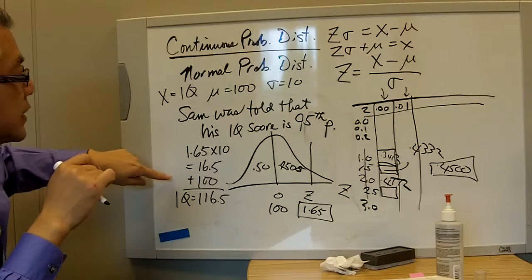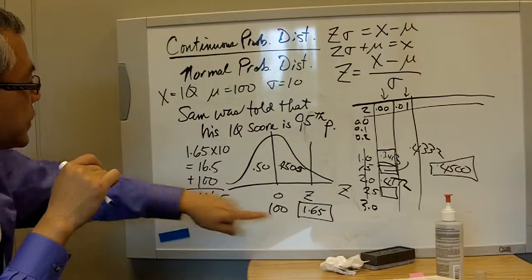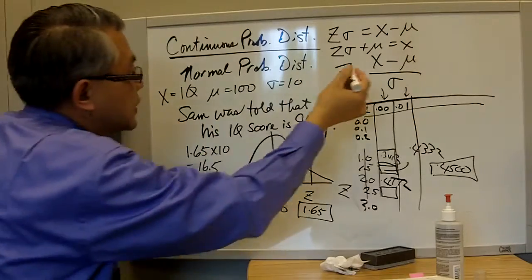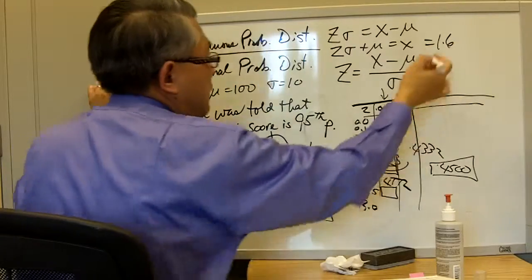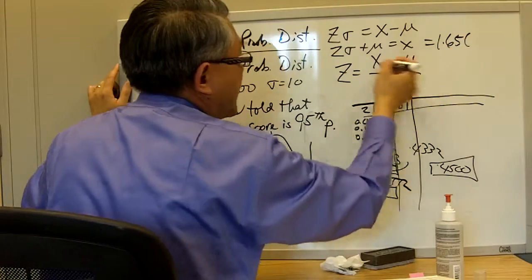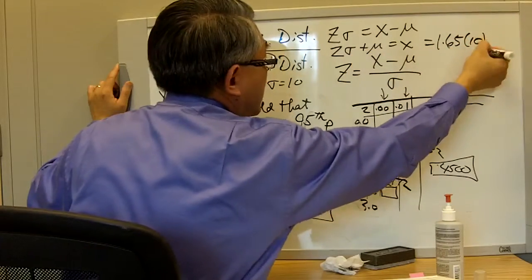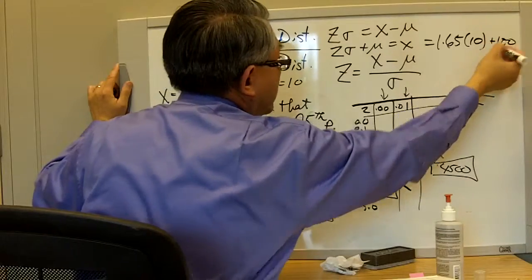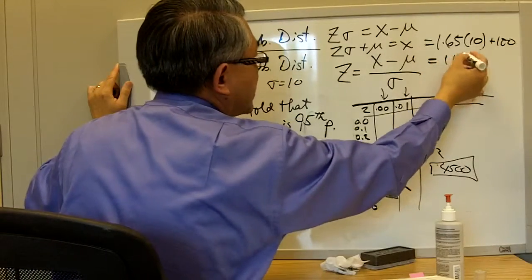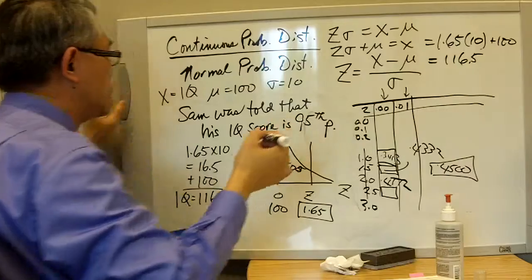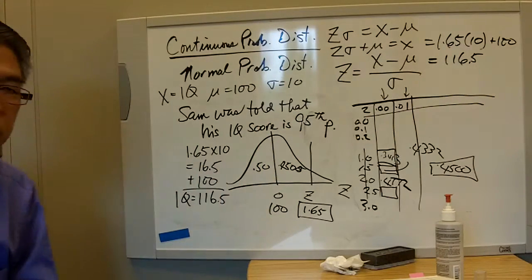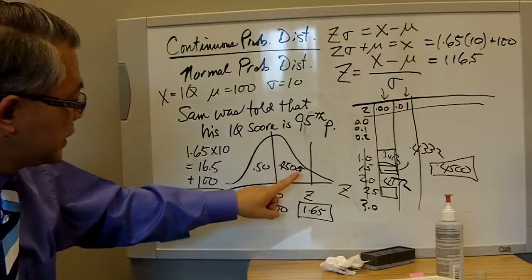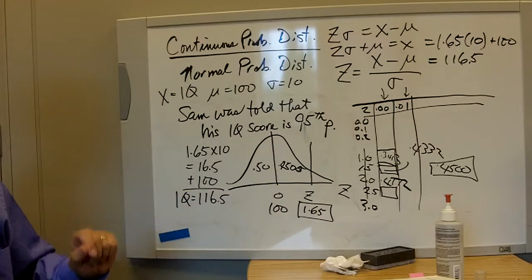So we have z equals 1.65. So in this case, that would be 1.65 multiplied by σ, which is 10, plus μ, which is 100, and as such we have 116.5, which is the score. And this equation will work both on this end and also on that end.